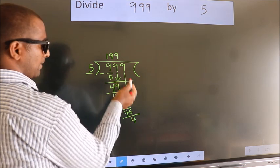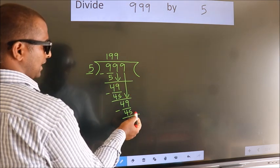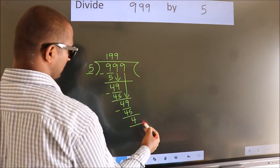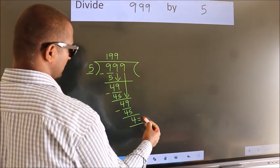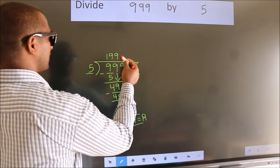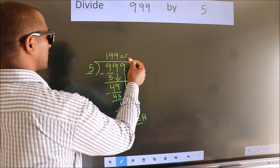There are no more digits to bring down, so we stop here. This 4 is our remainder, and the number above is our quotient.